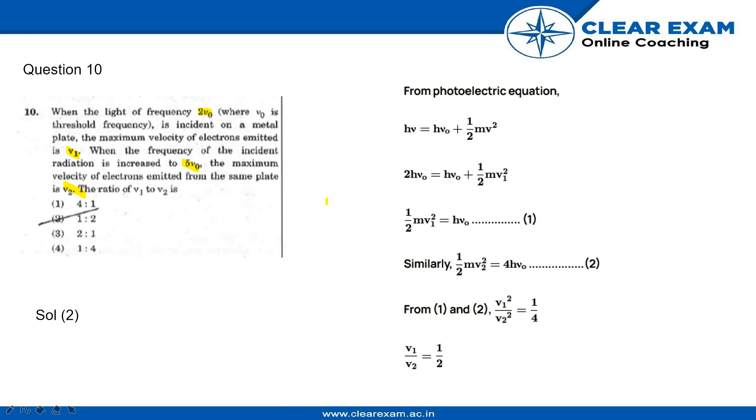The ratio V₁ to V₂ is: From the photoelectric equation, we have hν = hν₀ + ½mv². So we have 2hν₀ = hν₀ + ½mv². Since it is given that the frequency of the light is 2ν₀, the first equation we get is ½mv₁²